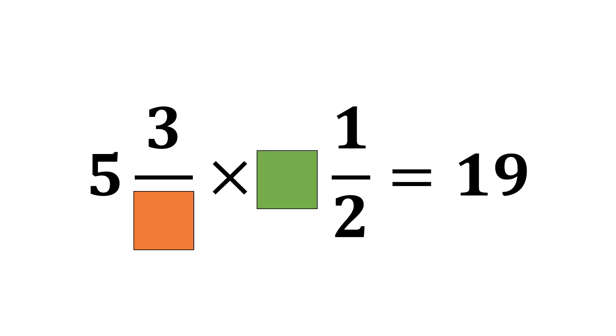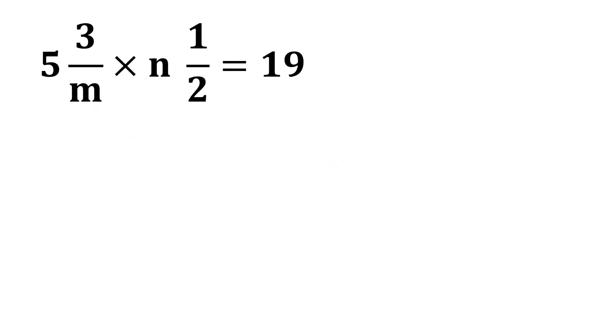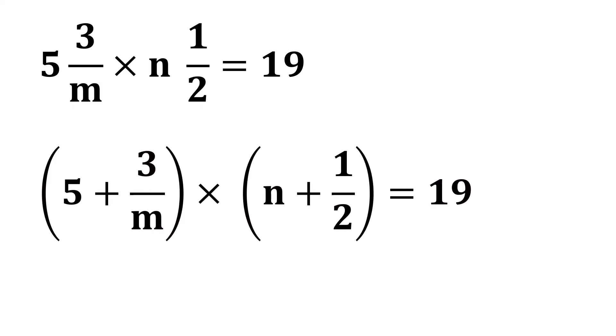Can you figure out what the two unknown numbers are? We'll solve this using algebra. Let's say the first unknown number is m and the second is n. According to the law of fractions, we can write the first term as 5 plus 3 over m and second term as n plus one half, which is equal to 19.